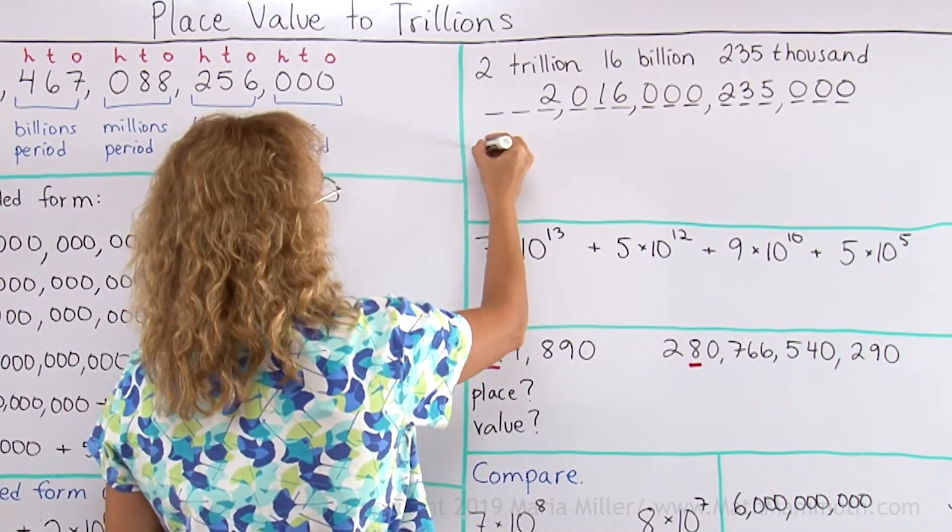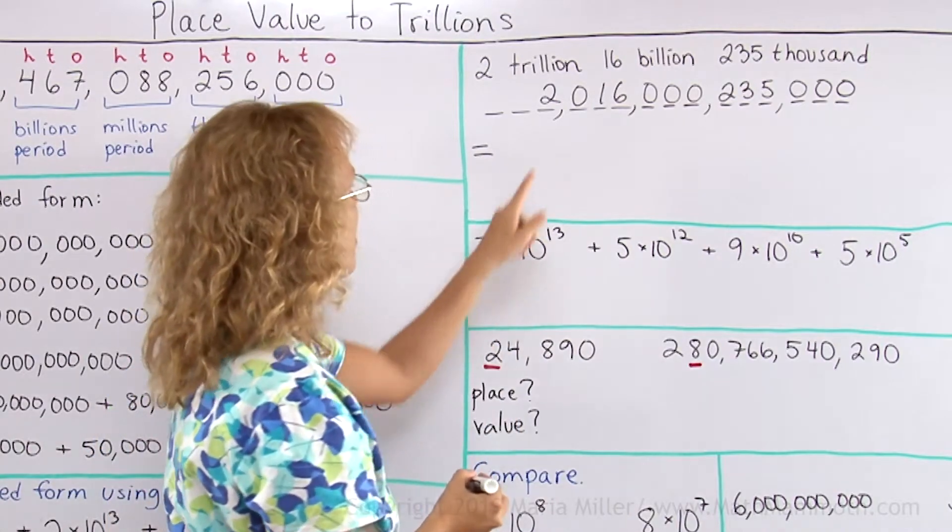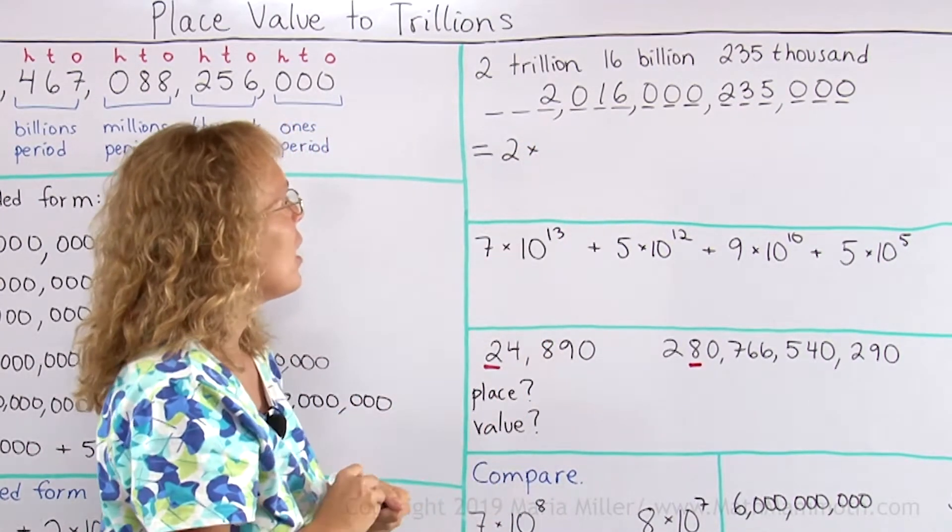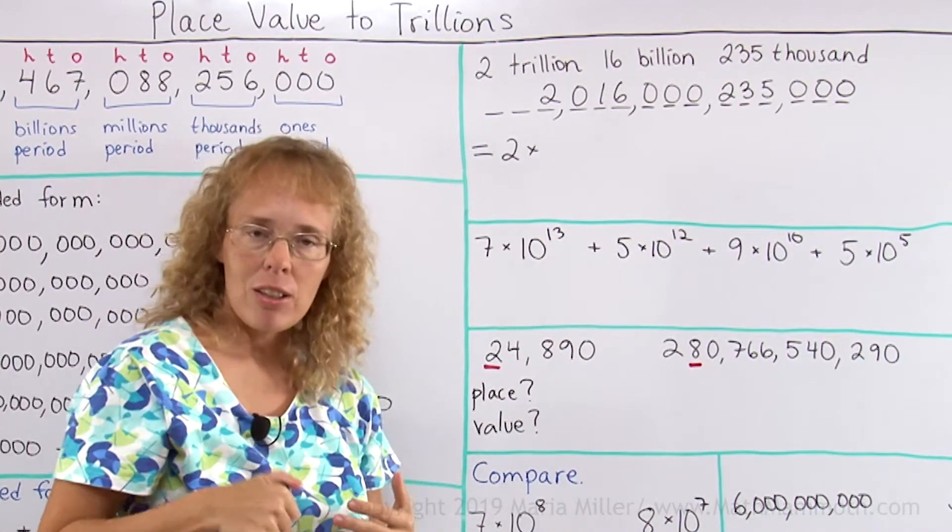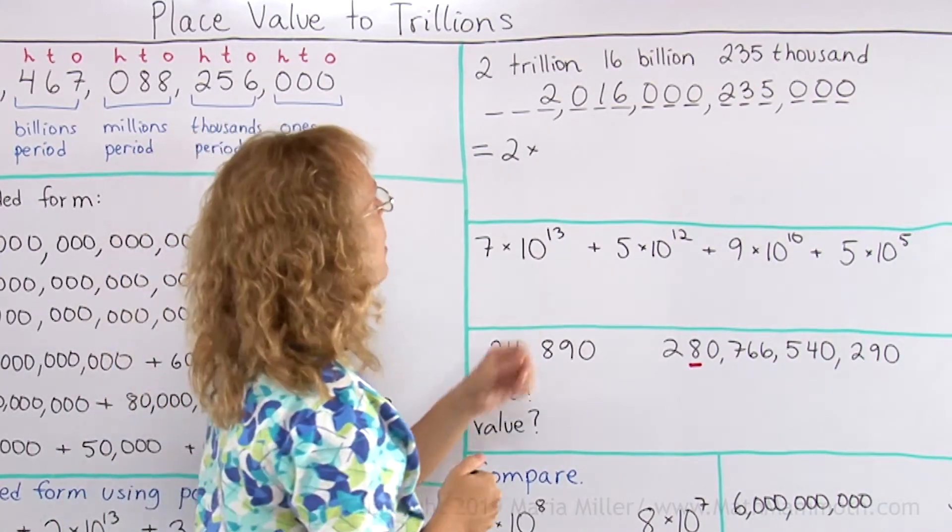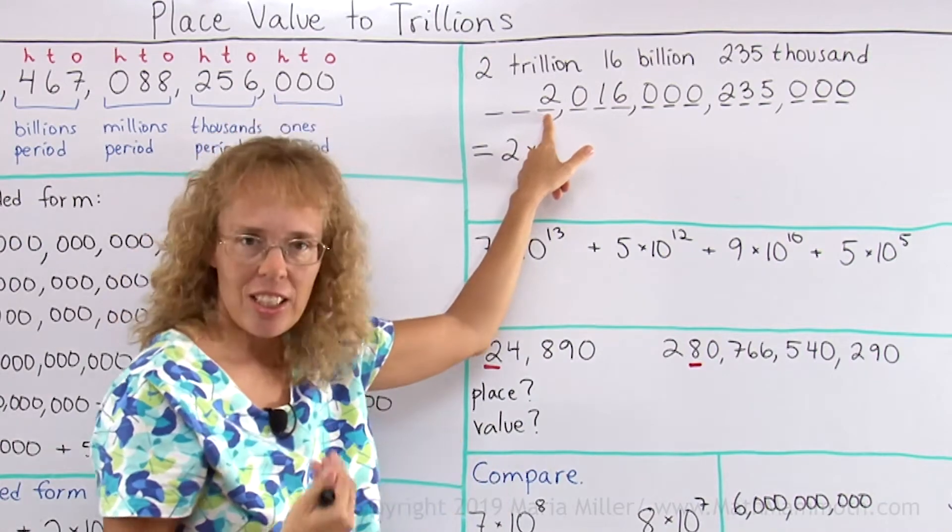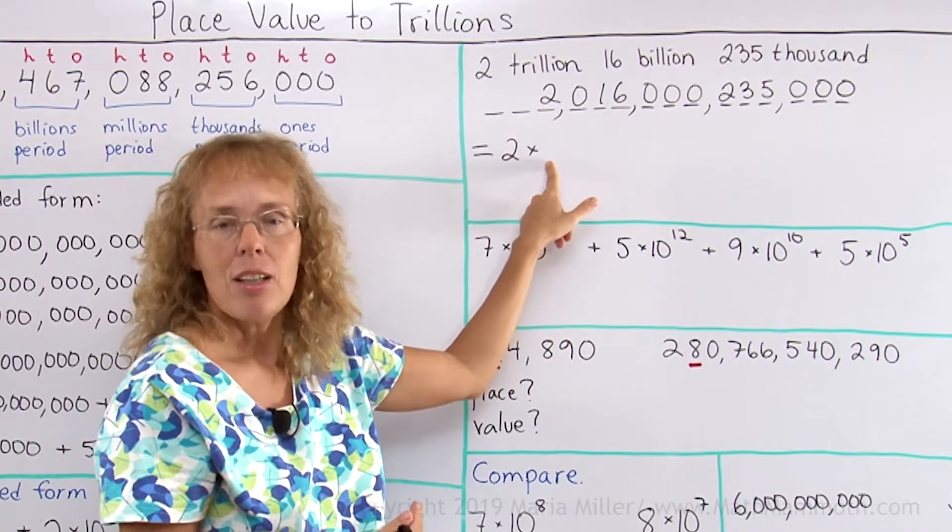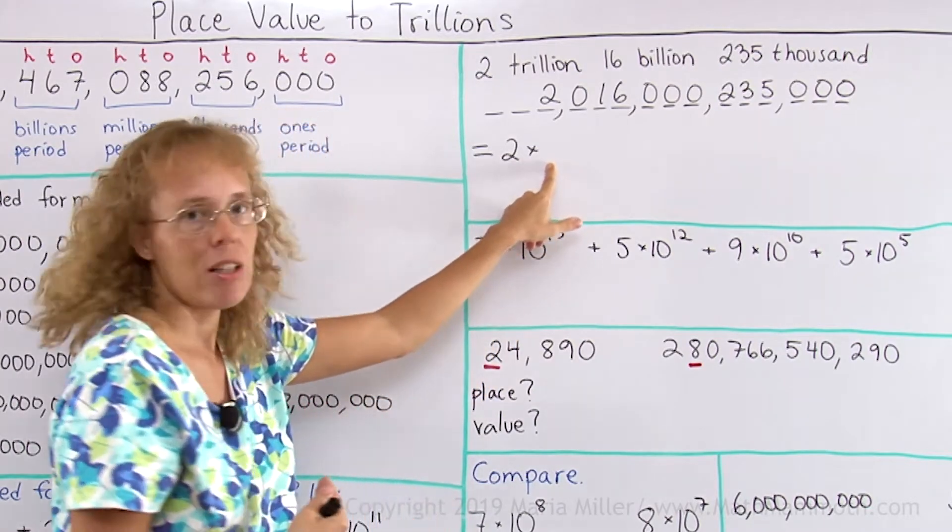And now let's write it in expanded form. I will start with the 2. 2 times—and what power of 10 will I use? This is 2 trillion, its value is 2 trillion, and so it is same as 2 times 1 trillion. 1 trillion as a power of 10,